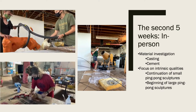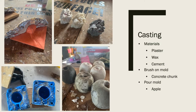Our second five weeks were in person, which was amazing — we honestly didn't know if this was going to be able to happen. When we were in the studio, we had an intense focus on materiality and did two different kinds of mold making. The first is a brush-on mold, shown in the top left. I used the brush-on mold to cast a piece of concrete I found on the road, casting it in plaster, wax, and cement. I also cast an apple using the same materials, but using a pour mold instead.